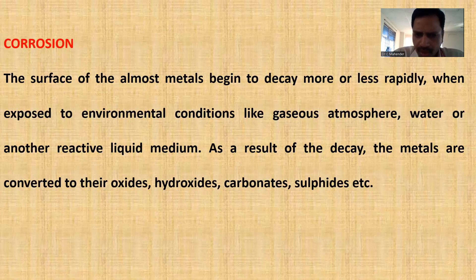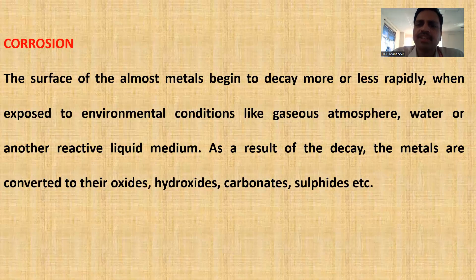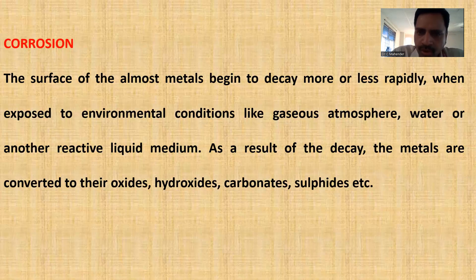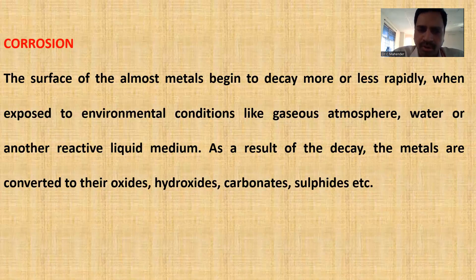When we bring the metal into its pure form and then expose it to the atmosphere, to different conditions, different temperatures, and different environments, it reacts with oxygen and tries to form the oxide form again. When the pure metal reacts with the environment or other chemicals and converts back to its ore, that process is called corrosion.